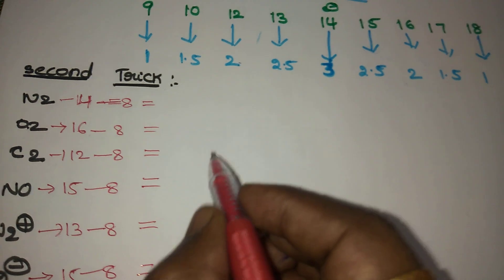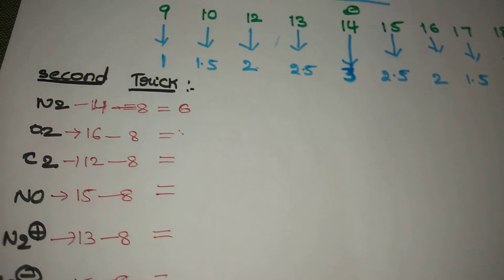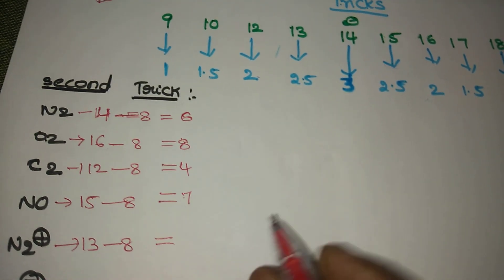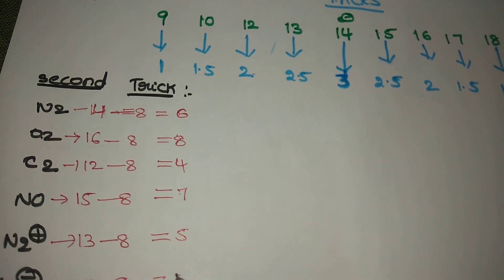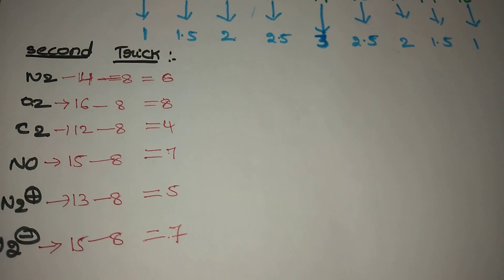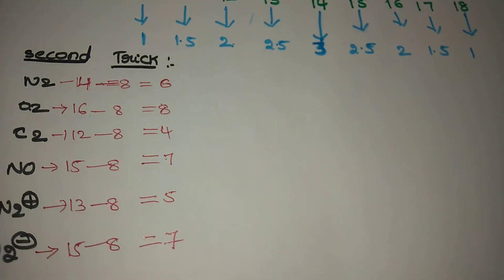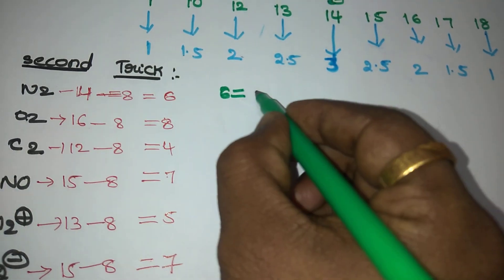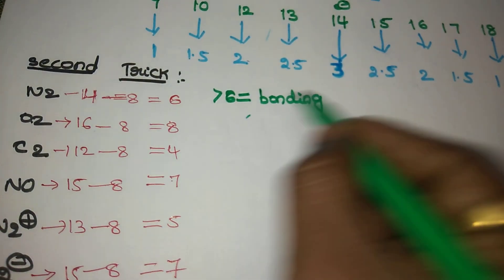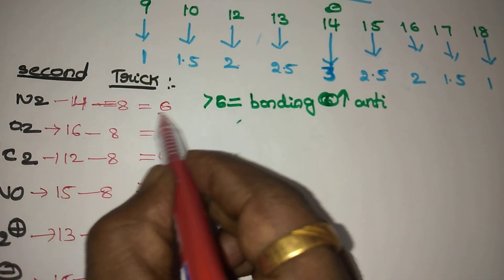After subtraction you get some numbers. For example: from 14 you get 6, from 12 you get 4 (wait — actually subtract from 8: 14−8=6, 12−8=4, 15−8=7, 13−8=5). Numbers exactly 6 or below 6 are called bonding electrons. Numbers more than 6 — the excess above 6 are anti-bonding electrons.